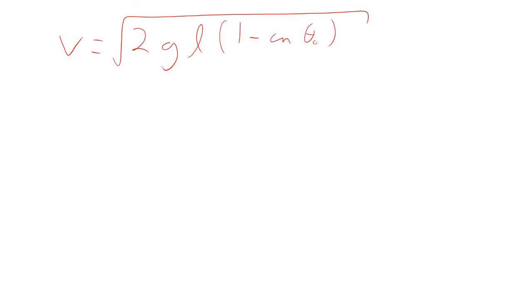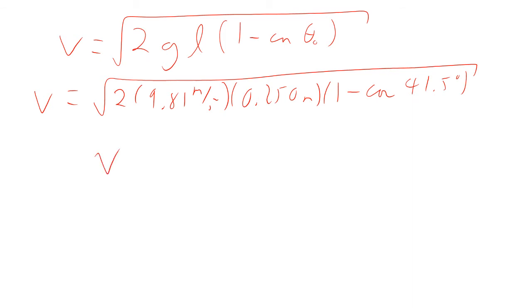Or it should be theta naught, actually. That's the initial theta. So this is square root of 2 times 9.81 meters per second squared, 0.25 meters times 1 minus the cosine of 41.5 degrees. And so the velocity at the bottom comes out to be 1.11 meters per second.